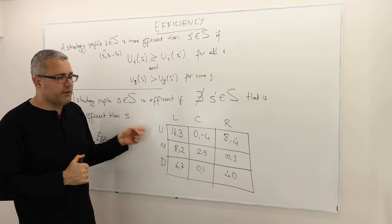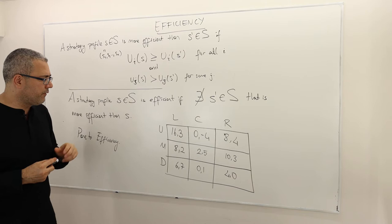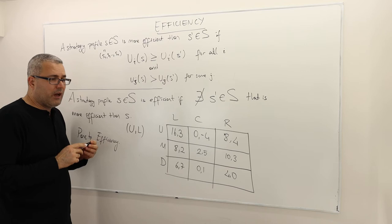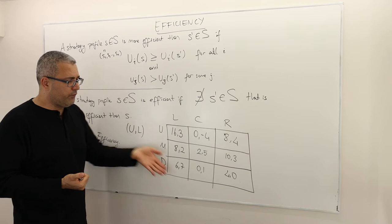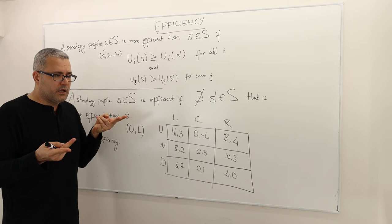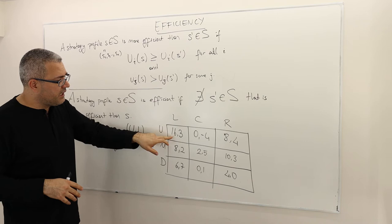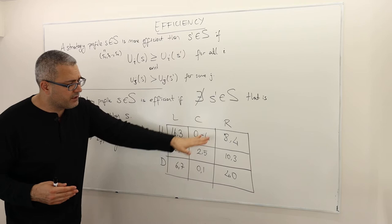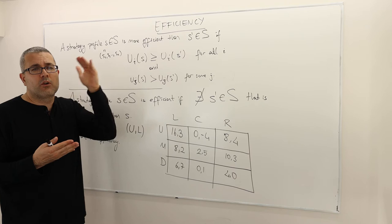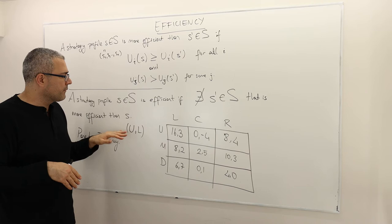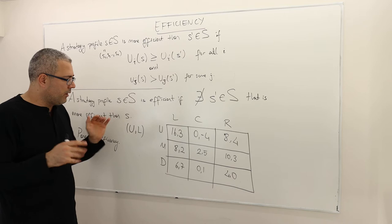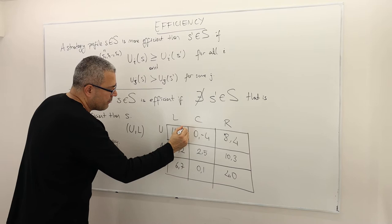Let's apply this idea to this game and find all the efficient strategy profiles. Is the strategy profile UL efficient? The question I should ask is: is there any other strategy profile in this game which gives both players a better payoff, at least weakly? Here the 16 payoff is very high — there's no other strategy profile where player one can get something equal to 16 or higher. So I don't need to look at the second player. Therefore, this strategy profile UL is efficient. Let me put a star here.